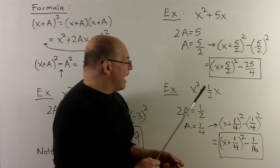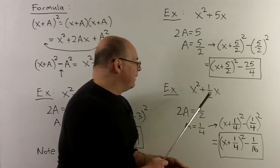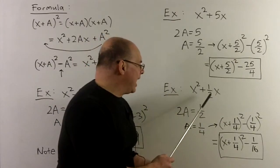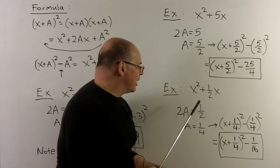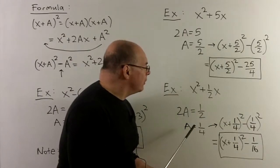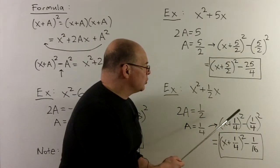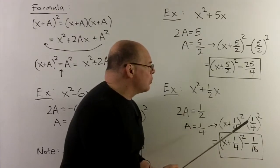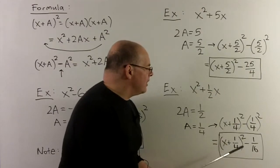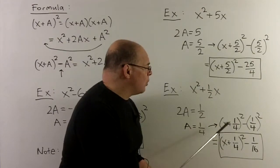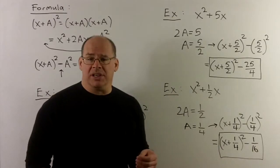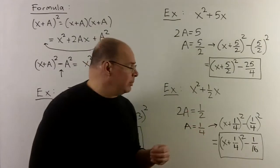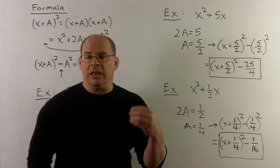Final example: x squared plus one-half x. Looking at what's in front of the x, I get one-half, so 2a equals one-half. Cut it in half to get a equal to one-fourth. Dropping into the formula: x plus one-fourth, quantity squared, minus one-fourth squared. One-fourth squared equals one-sixteenth, so our final answer is x plus one-fourth, quantity squared, minus one-sixteenth. We could check by expanding, but that's an exercise in fractions — we leave that to you.